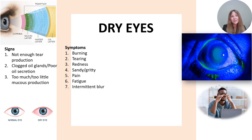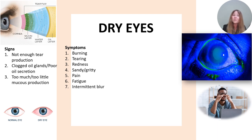Under the microscope it can look something like this. We use a yellow dye called fluorescein, and this yellow dye will glow under a cobalt blue light. The yellow dye will stain all of those surface cells that are damaged or dehydrated. The areas that are glowing are actually dried out — you can see diffuse spots glowing on the cornea and also some areas on the white part of the eye, which is the conjunctiva, and those cells are glowing due to dryness.